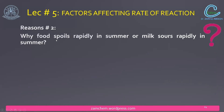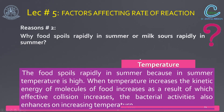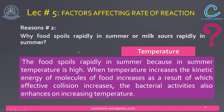Here is another reason: why does food spoil rapidly in summer, or why does milk sour rapidly in summer? The reason is temperature. When temperature increases in the heat, the activity of micro-organisms in the food increases. So the rate of decomposition of food changes, and bacterial activity also increases, causing food to spoil quickly.